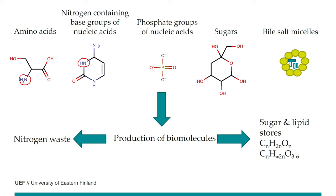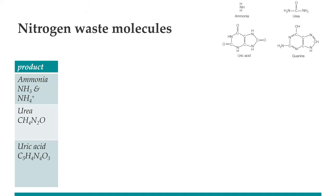In the nitrogen waste we can have different products: ammonia, urea, and uric acid. Ammonia is a very simple and small molecule. Urea is a little larger but releases two nitrogens per molecule. Uric acid releases four nitrogens and is a larger molecule compared to the others. These are the main end products of nitrogen waste in different animals.